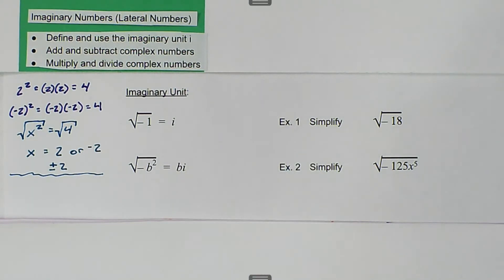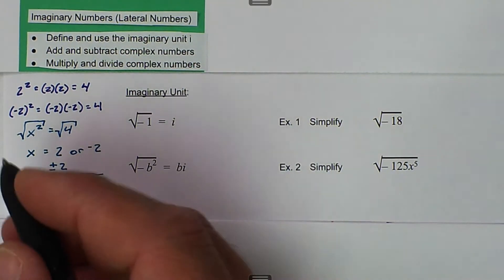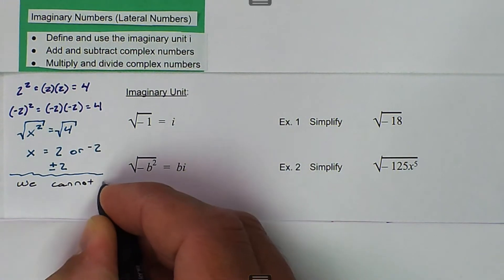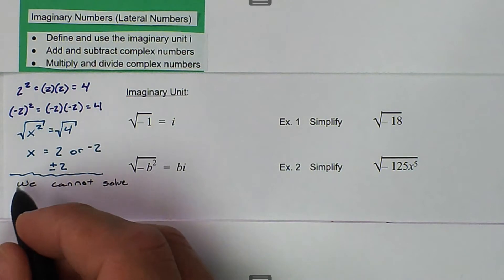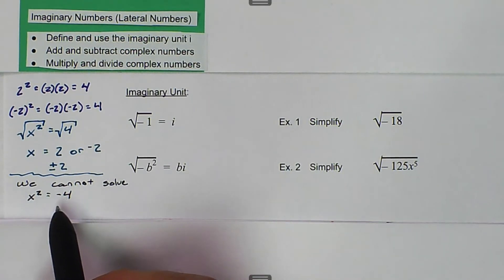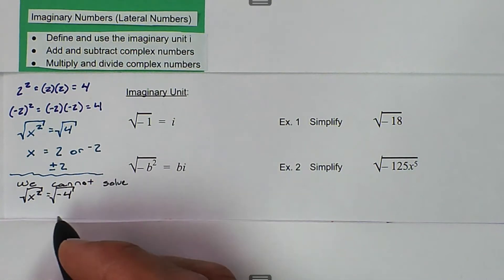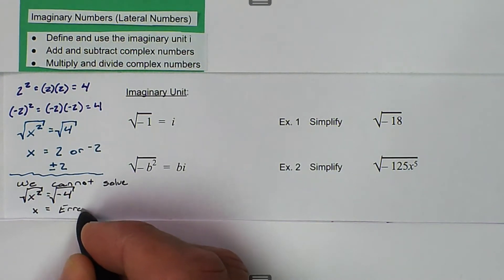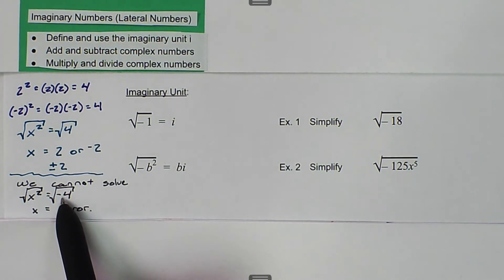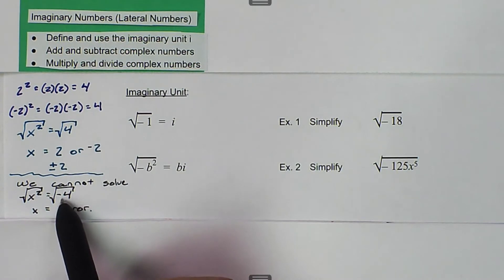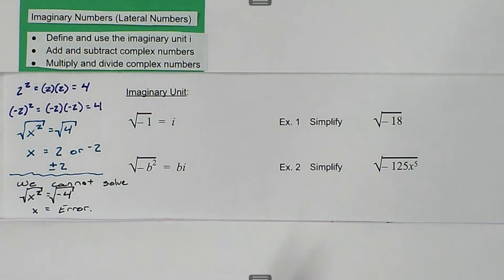The issue is when we have x squared equals negative 4. There's no two numbers that we could multiply together, or one number that we could multiply by itself, that would get us to negative 4. If we take the square root of both sides, we get an error on our calculator. Because a negative times a negative is a positive, and a positive times a positive is a positive — there's no way to get to negative 4. That's why we have imaginary units.